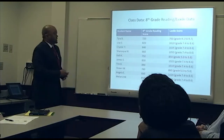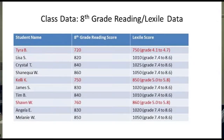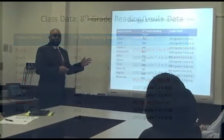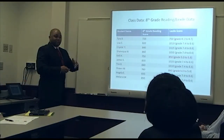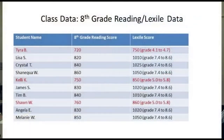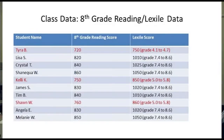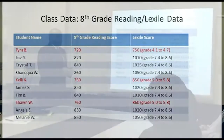In our last group, Tyra B. scored 720 on the reading CRCT with a 750 Lexile — reading at a fourth grade level. So in this class alone, reading levels span from fourth grade all the way to eighth grade. Shaniqua W. scored 860 with a 1050 Lexile, close to the eighth grade sixth month target.